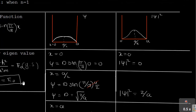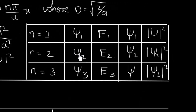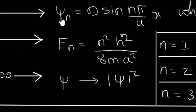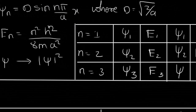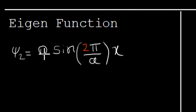So we have the energy eigenvalue, eigenfunction, and probability density for case one. Now let's see case number two. When n = 2, the eigenfunction is ψ₂ = D·sin(2π/a · x).